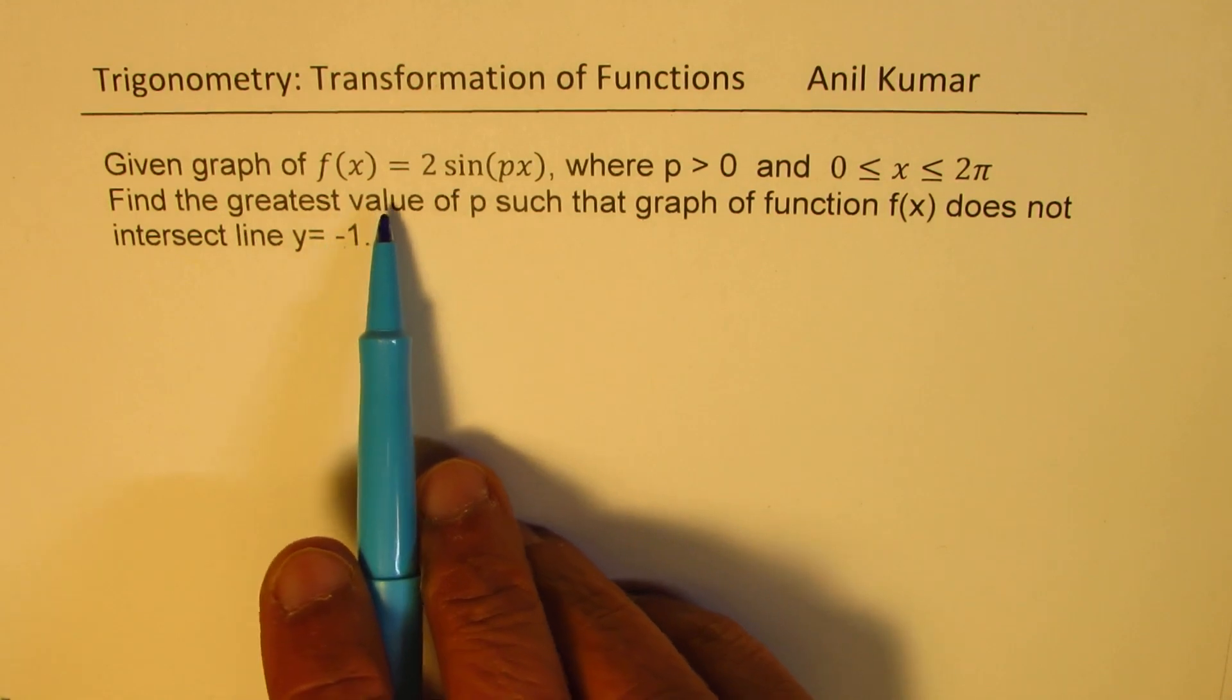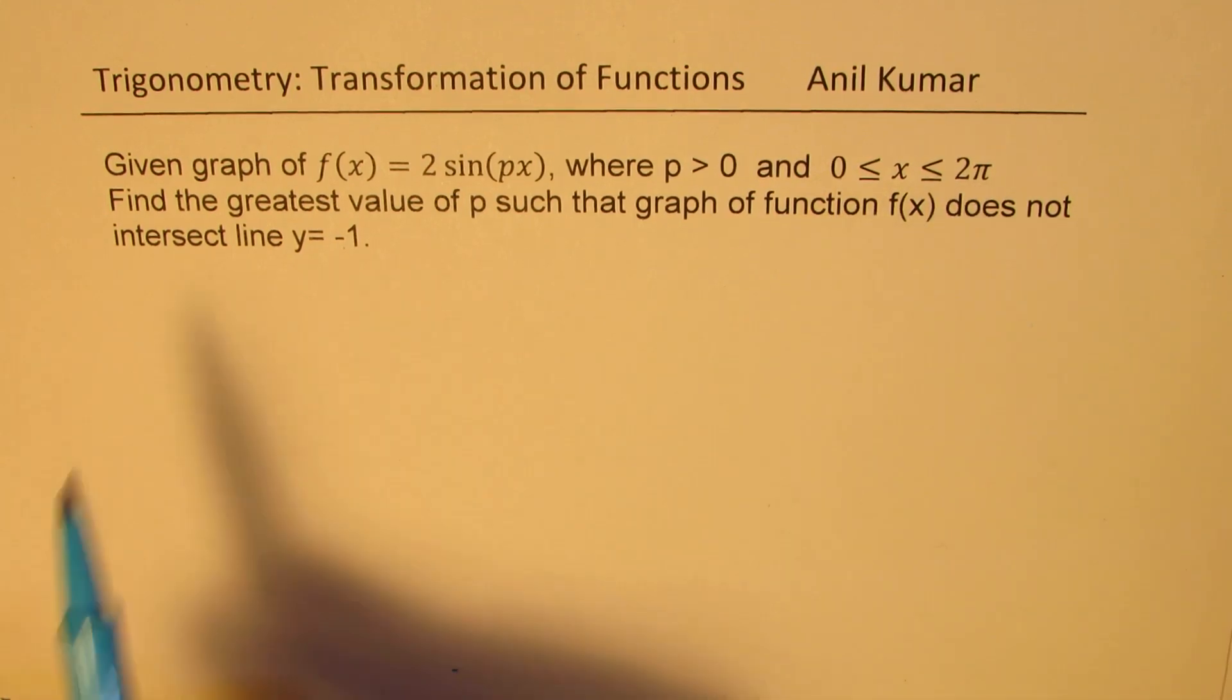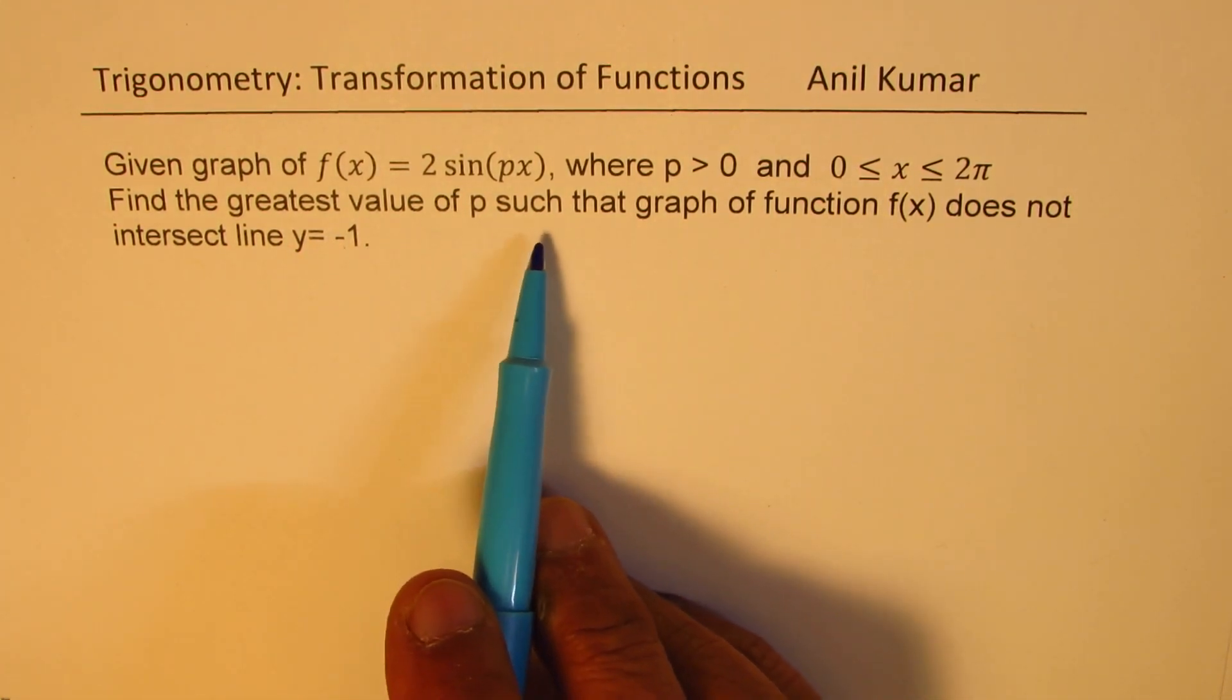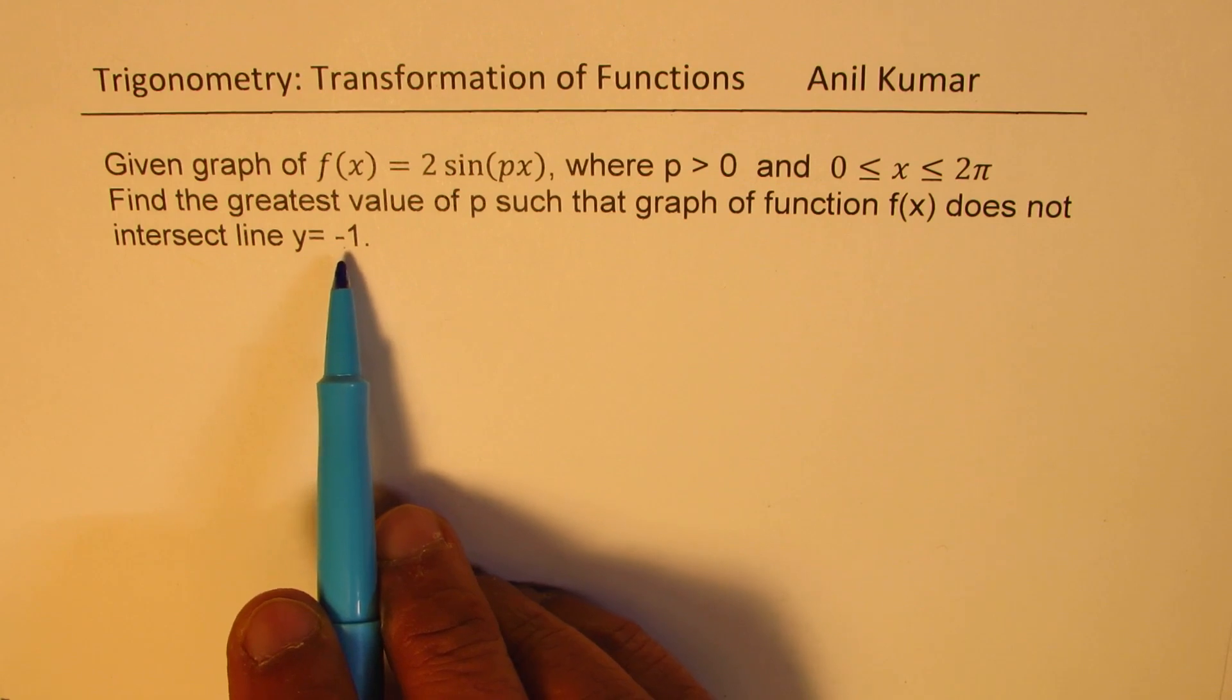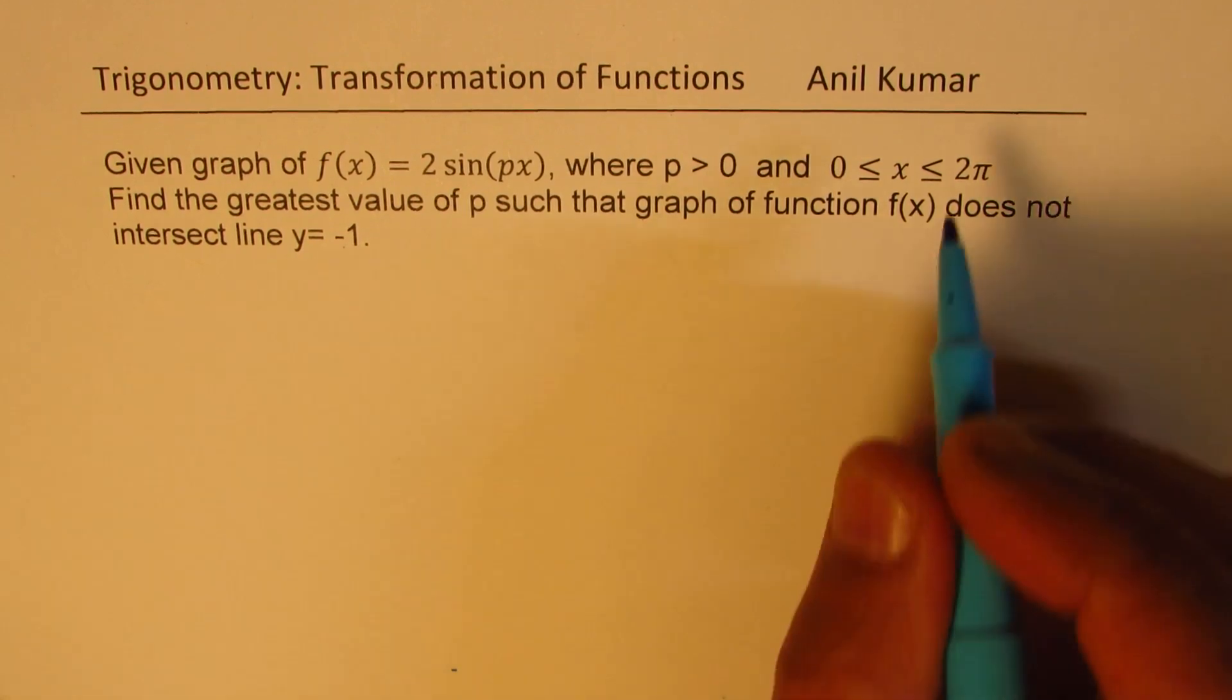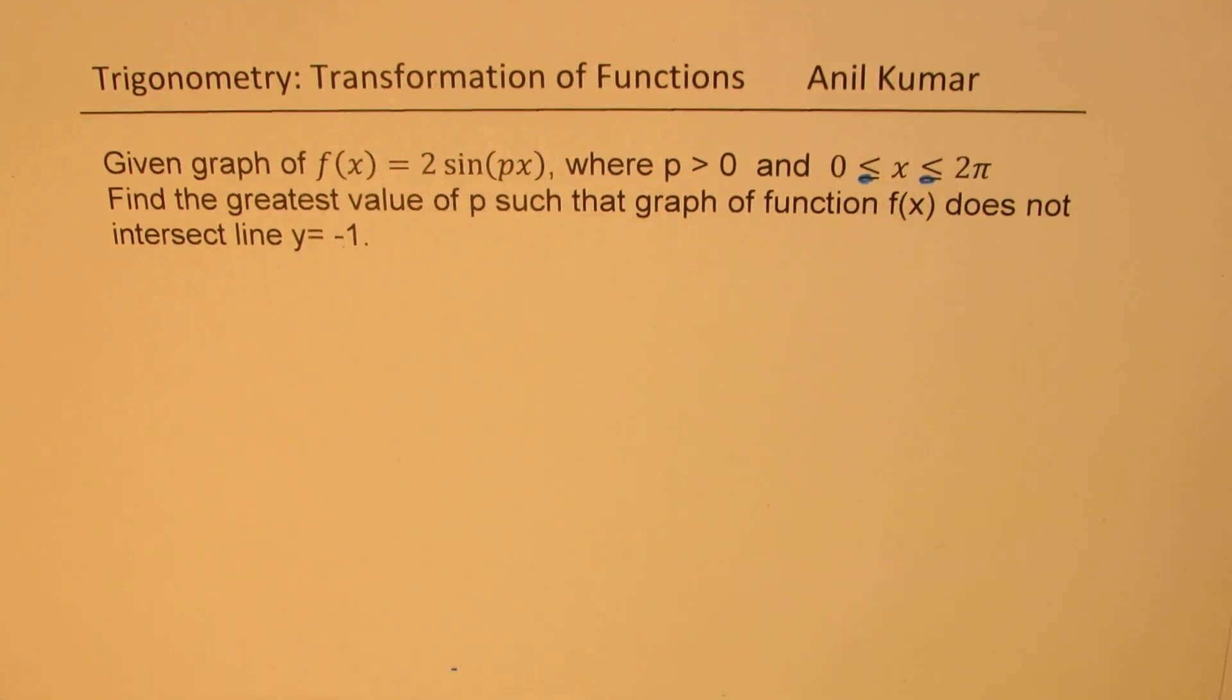Given graph of f(x) equals 2 sin(px), where p is greater than 0 and x is between 0 to 2π, find the greatest value of p such that the graph of the function does not intersect the line y equals to minus 1. Strictly speaking, this is like less than 2π. Let me make this x as greater than 0 and less than 2π.